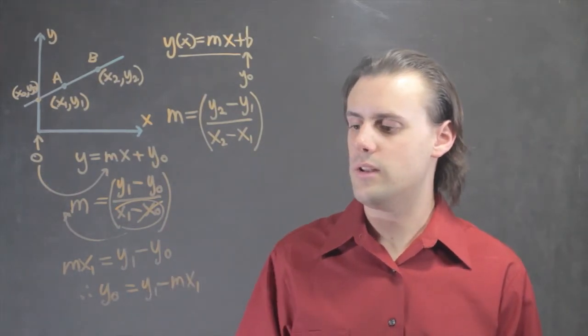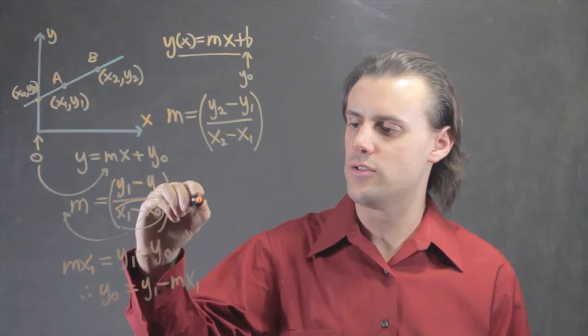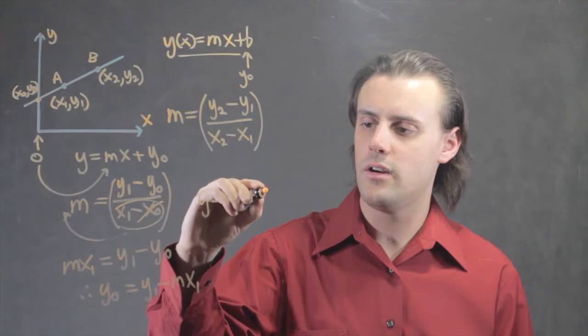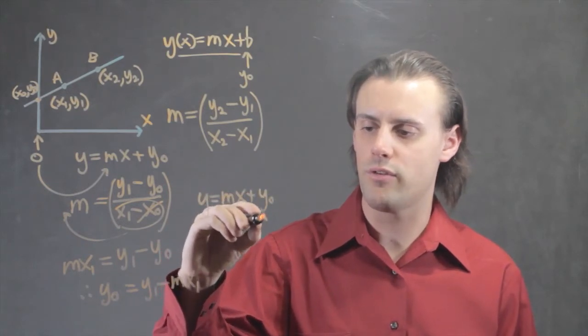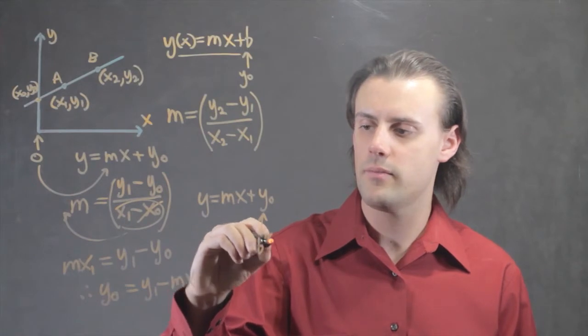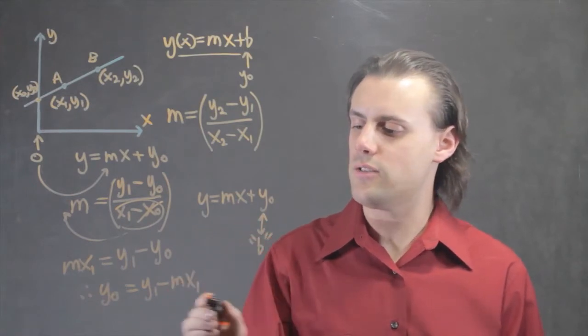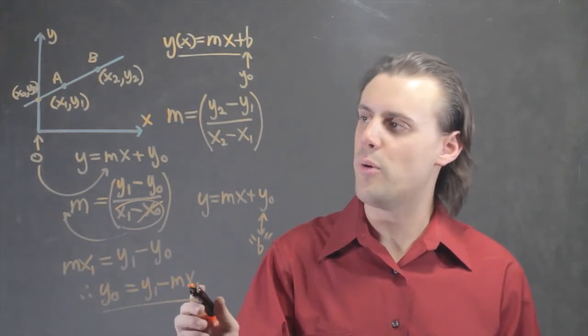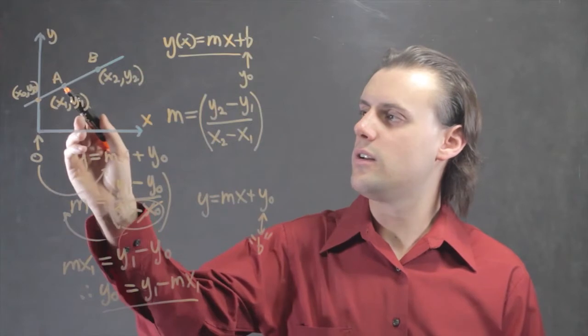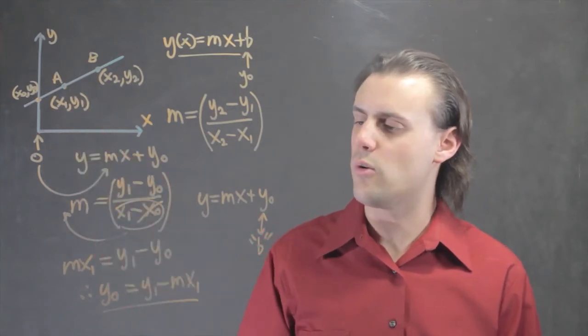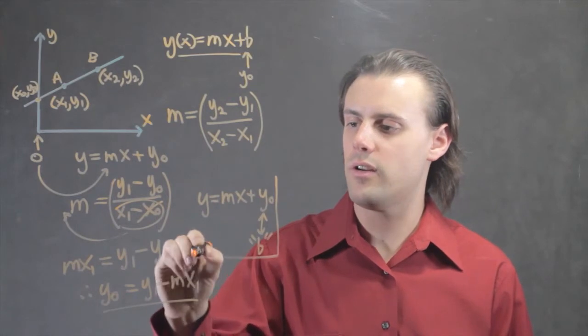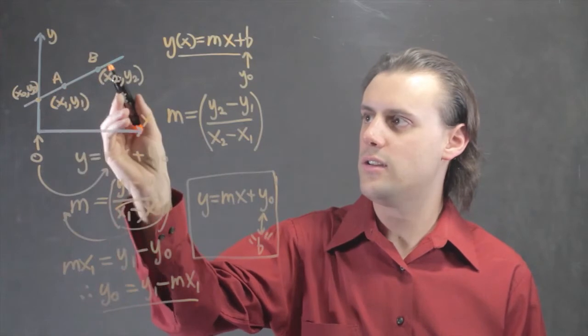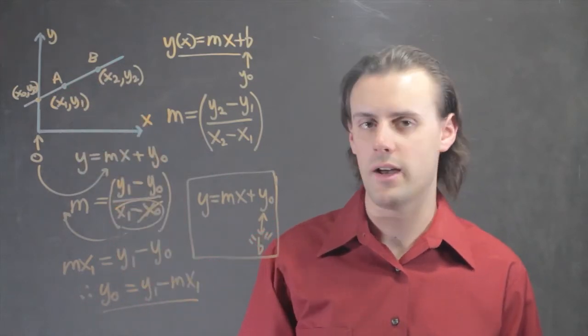So, now I have my final equation, which is y is equal to mx plus y0, or sometimes it's referred to in the literature as b, and my y-intercept is given in terms of the slope and a set of points that I chose. Here, I chose A, which is a coordinate. So, I finally have my slope equation that describes the line for a set of two coordinates in my xy-plane.